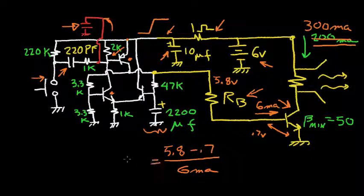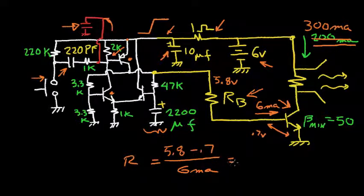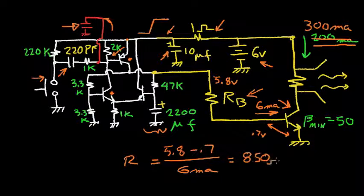So this is Ohm's law for resistance, which is voltage divided by current. So if I solve that, I get about 850 ohms.